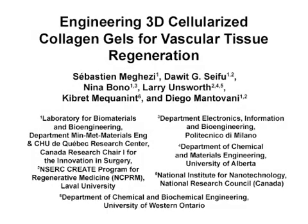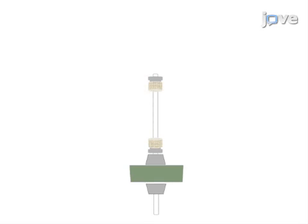The overall goal of this procedure is to engineer tubular constructs for vascular tissue regeneration. This is accomplished by first combining type 1 collagen and smooth muscle cells in cylindrical geometry using a molding technique.